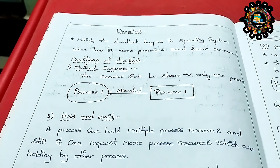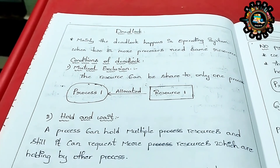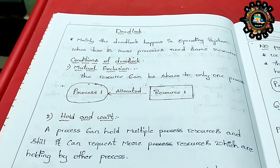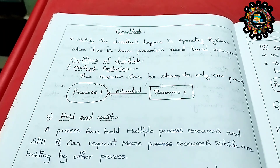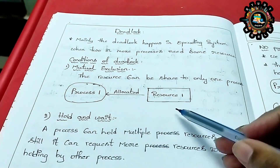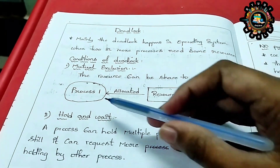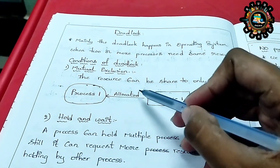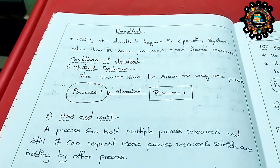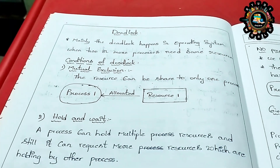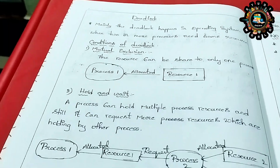There are four conditions for deadlock. The first is Mutual Exclusion — a resource can be shared with only one process at a time. Not more than one process can use the resource. This is the first condition.